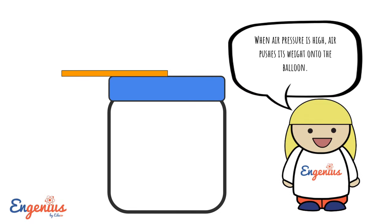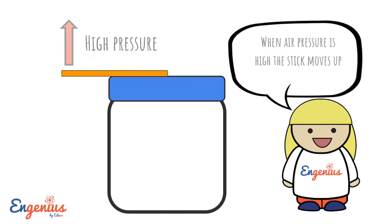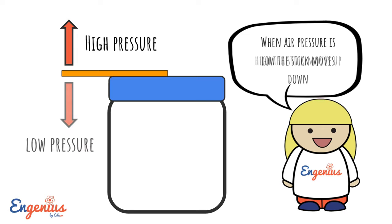When air pressure is high, air pushes its weight onto the balloon and the stick moves up. When air pressure is low, the stick moves down.